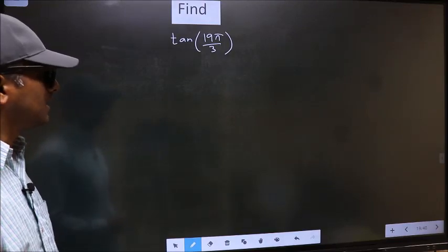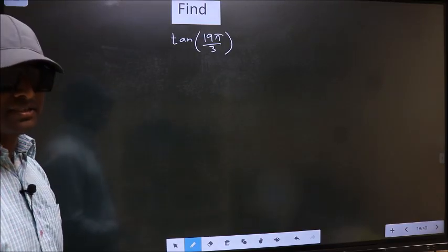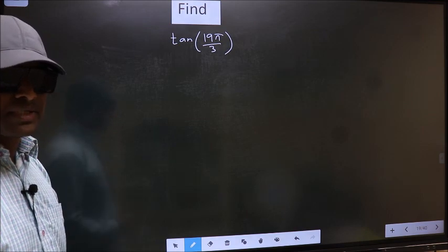Find tan(19π/3). To find this, we should follow this method.